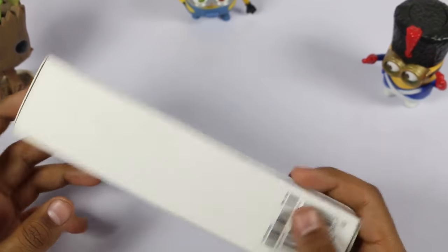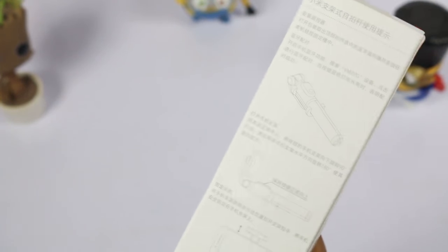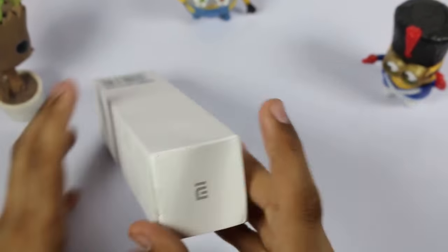This is the package, which is, as always, a white color box with an all-over Mi logo and a product photo in front. At the back, everything is written in Chinese, and I won't take the pressure of trying to read it using Google Translate. When we open up the box, we first get a small box inside it.